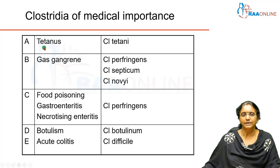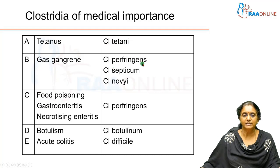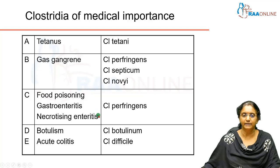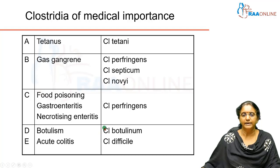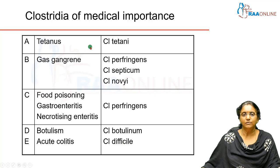Many Clostridium species cause serious diseases. Clostridium tetani causes tetanus; gas gangrene is caused mainly by Clostridium perfringens, along with septicum and novyi. Clostridium perfringens also causes food poisoning, gastroenteritis, and necrotizing enteritis. Botulism, a very dangerous form of food poisoning, is caused by Clostridium botulinum.